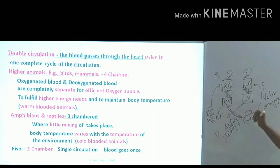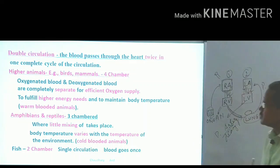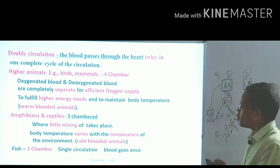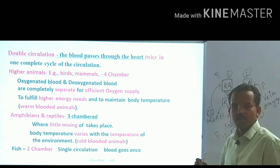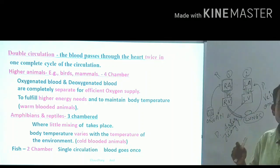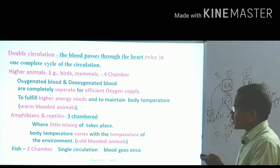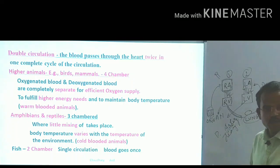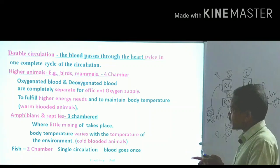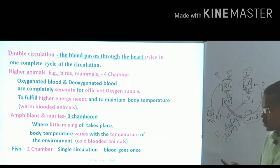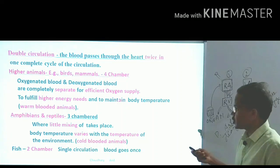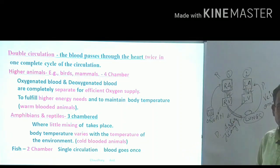Double circulation means blood enters the heart two times. In birds, mammals, and higher organisms, there are four chambers. Four chambers are required because these animals need maximum oxygen, must maintain higher body temperature, and oxygenated and deoxygenated blood must not mix. Birds need more energy for flying, and mammals also require high energy — that's why four chambers are separated, and these are called warm-blooded animals.